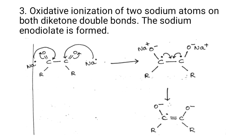Step three is the oxidative ionization of two sodium atoms on both diketone double bonds. The diketone is more reactive and more electrophilic than the starting compound, so the electron more aggressively attacks the diketone carbonyl carbon, forming an anionic species. Further dimerization forms a stable compound.